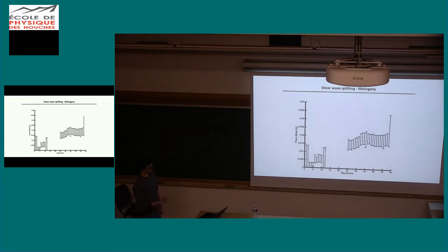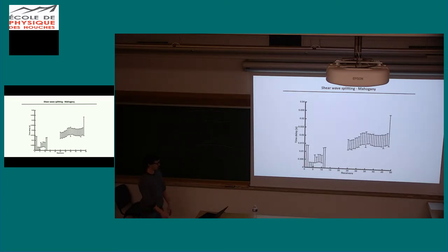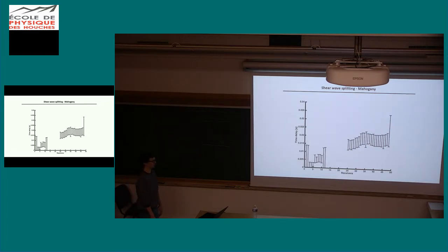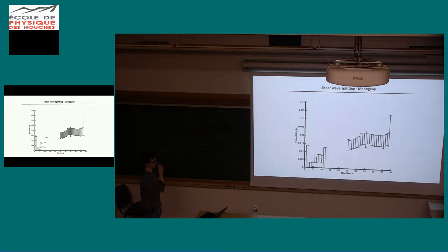We do this for all of the receivers. On the x-axis are the different receivers — receiver 1 is inside the salt and receiver 48 is already outside, below the salt. On the y-axis is the time delay between fast and slow shear waves, estimating the amount of seismic anisotropy. We see an increasing time delay with ongoing travel time through the salt, which is a very clear sign of seismic anisotropy. We had some problems with wave conversions from salt to the shale layer beneath, giving suspiciously high time delays in that range.